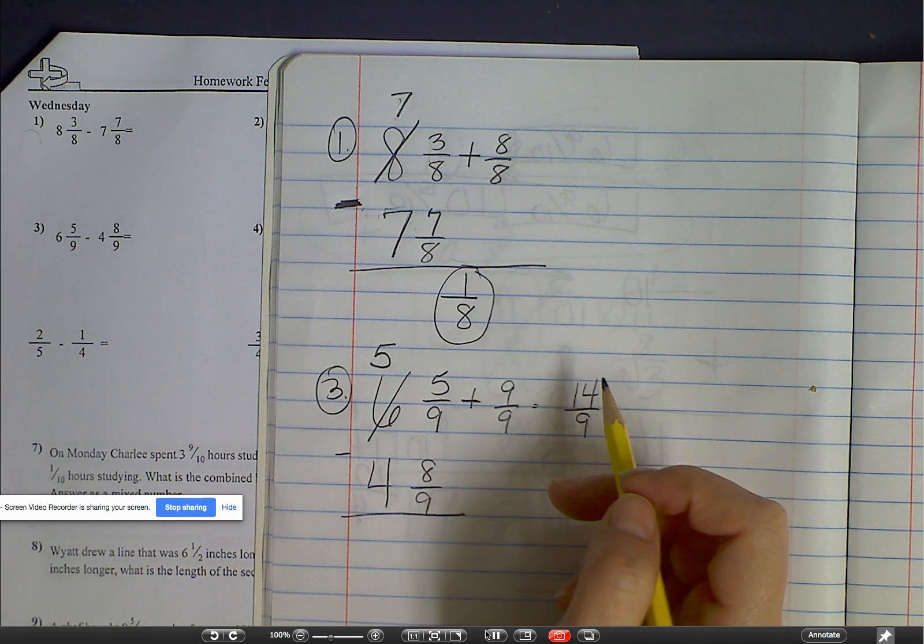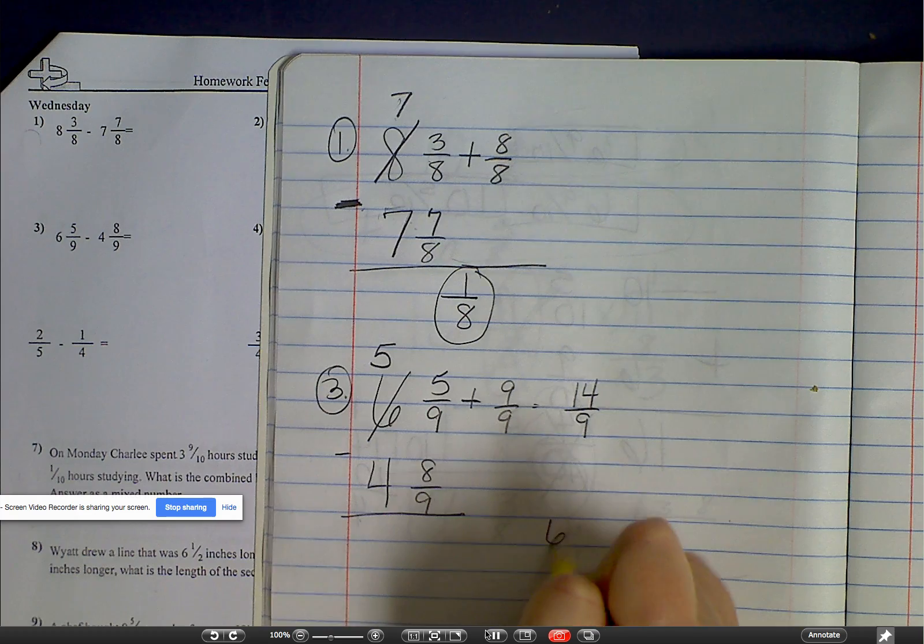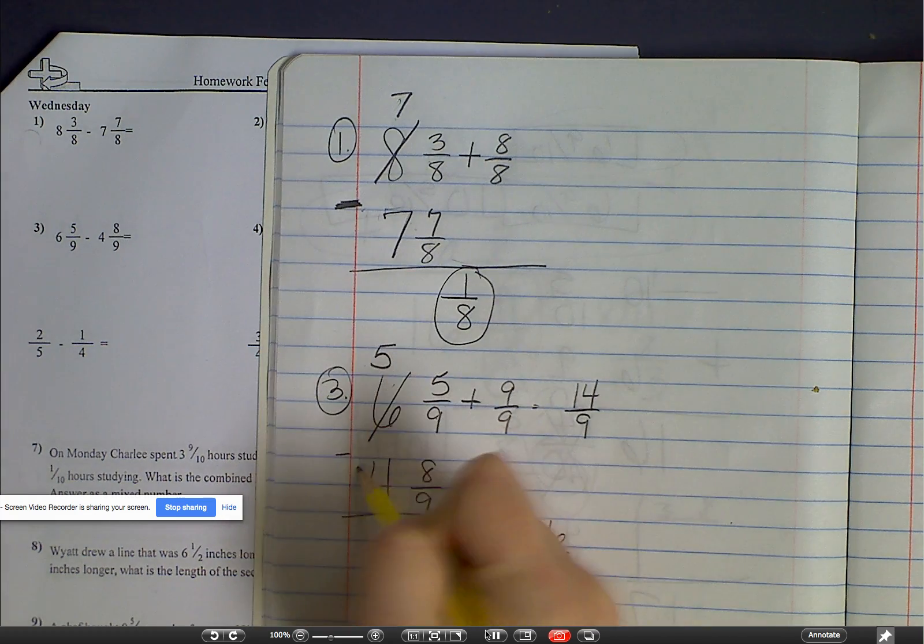Fourteen minus eight is six. So I have six-ninths, and then five minus four is one.